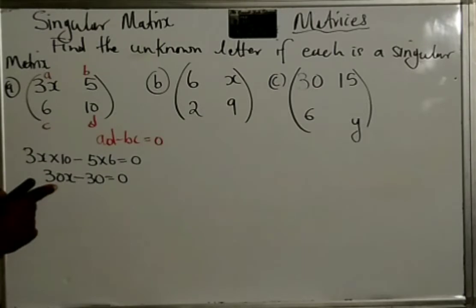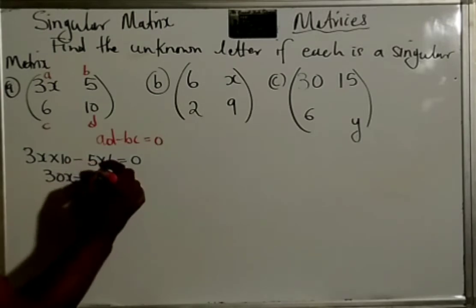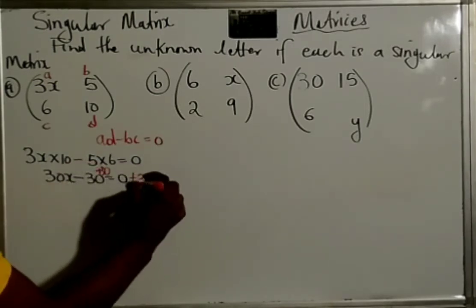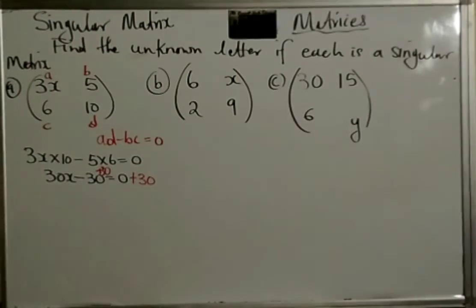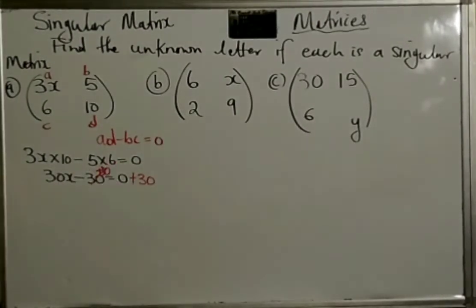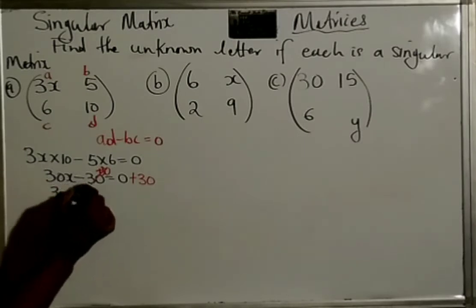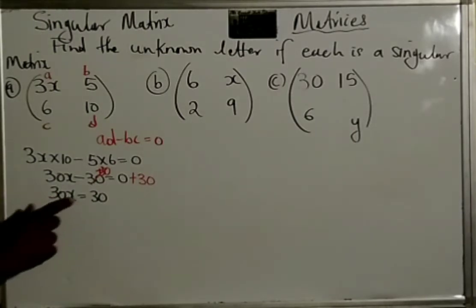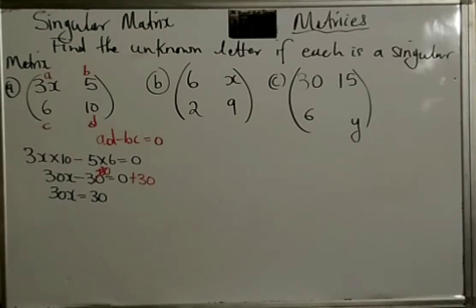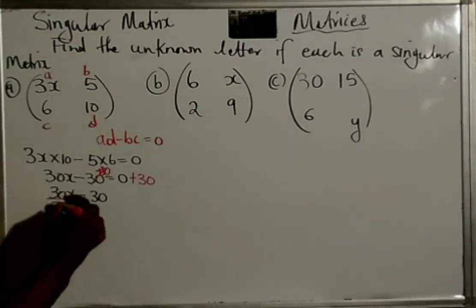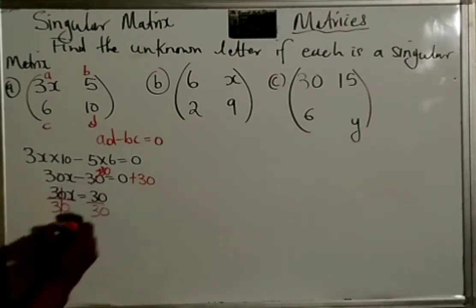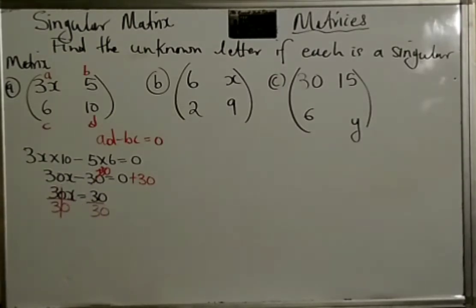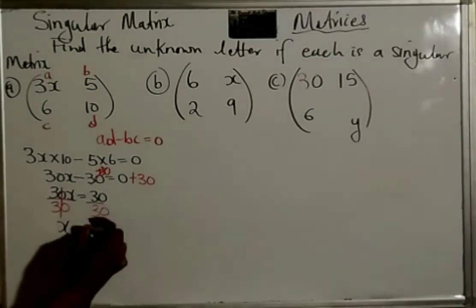Now, what we have to do is solve for X. Now, we have a minus 30 here, so we just add 30 to this side. We do to one side, we do to both sides. So, that's gone to zero, right? So, we are left with this. 30X is equal to zero plus 30 is 30. Now, all we have to do is to say 30 times what is equal to 30? So, we can just divide by 30, we do to one side, we do to both sides.